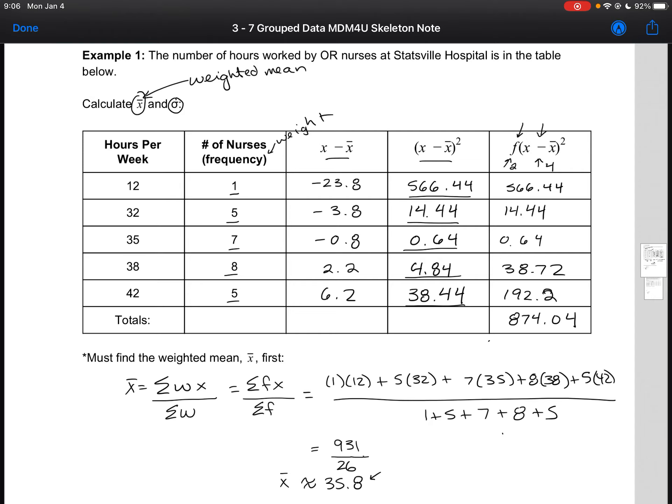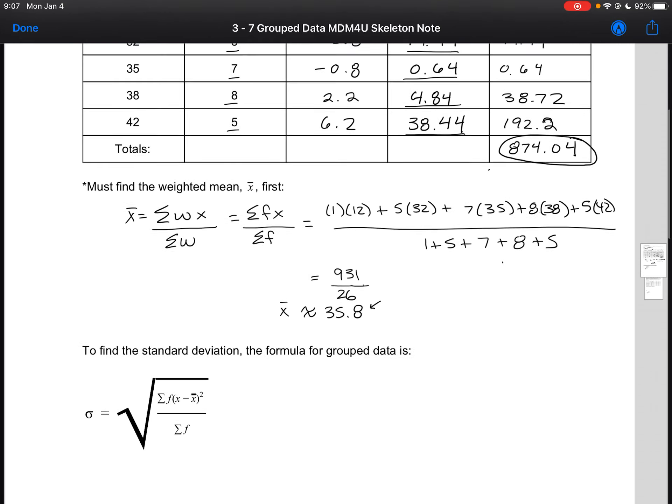This column is important. You could expand this all out, and you would have a much longer table. So for example, you would have 1 data point that was 12, you'd have 5 data points that were 32, 7 that were 35, and so on. So by condensing them into this frequency table, it allows us to do 1 calculation for each data point that is the same, which makes our calculation much more efficient. So what we have now is the value that we need to be able to calculate the standard deviation. So we can use our formula here. Same as before, the only difference is that we have to multiply by that frequency, which we did in our table. So we can write this out here as 874.04 divided by 26.